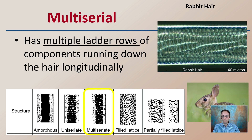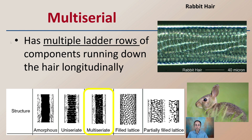The multi-serial medulla has multiple lateral rows of components running down the hair in the longitudinal direction. Rabbit hair is an example that falls under this category, and we can see that evident here at the same magnification of 40 microns.